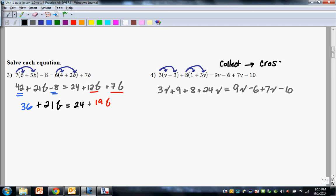I think that's a better notation. You collect before you cross the equal sign. So on the left, we're going to collect our numbers and our variables. On the right, let's collect our numbers and our variables. So that's 3 plus 24, that's going to be 27v plus 9 plus 8, that's 17, 15 equals 9 plus 7, that's 15, excuse me, 16v, and negative 6 minus 10 is negative 16. And you take it from there.